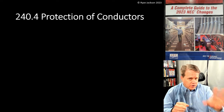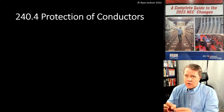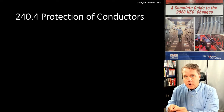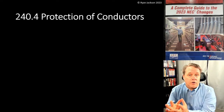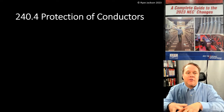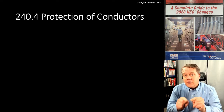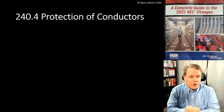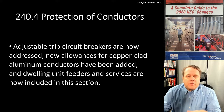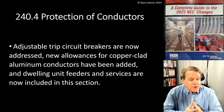Overcurrent protection is required for conductors and for equipment. We provide overcurrent protection for equipment in the equipment articles — Article 422 for water heaters, Article 450 for transformers — but the conductors themselves are taken care of here in 240.4. This is a really important section. Adjustable trip circuit breakers are now addressed, new allowances for copper-clad aluminum conductors have been added, and dwelling unit feeders and services are now included.